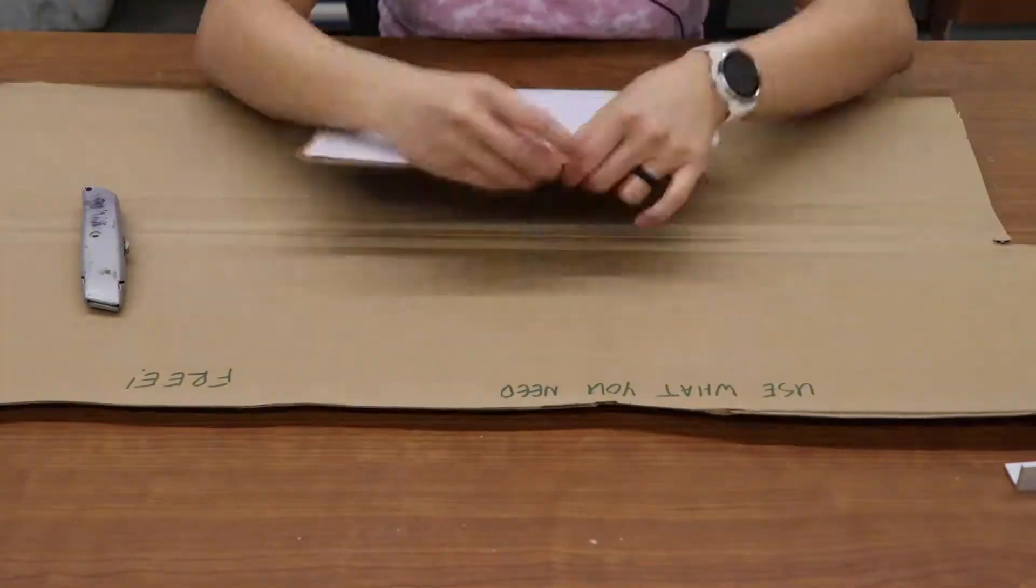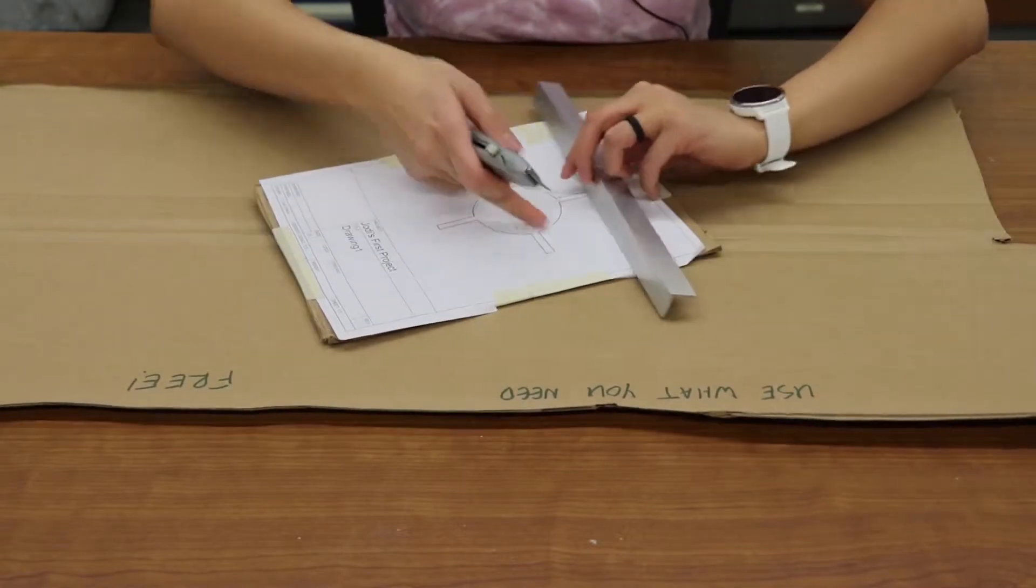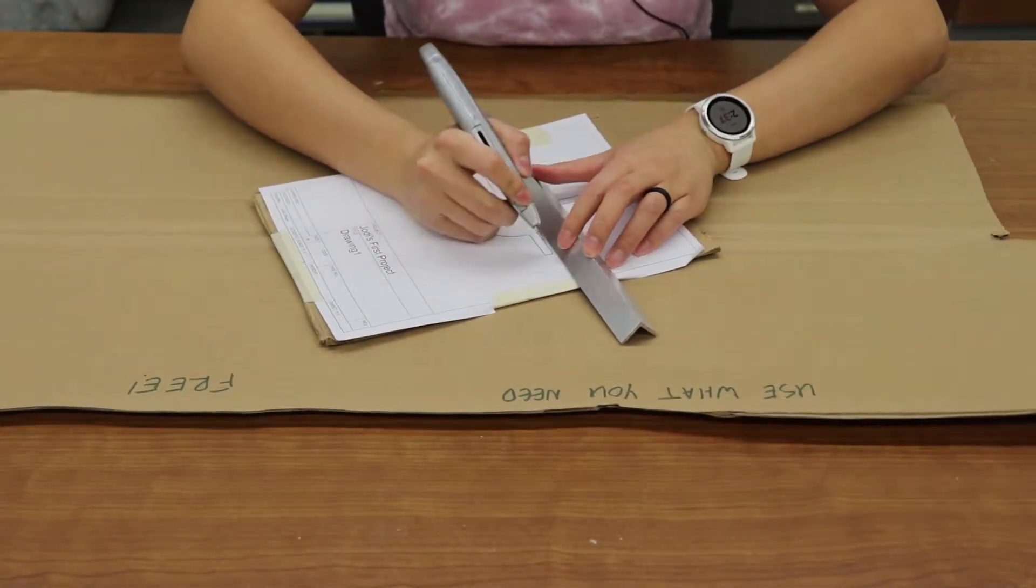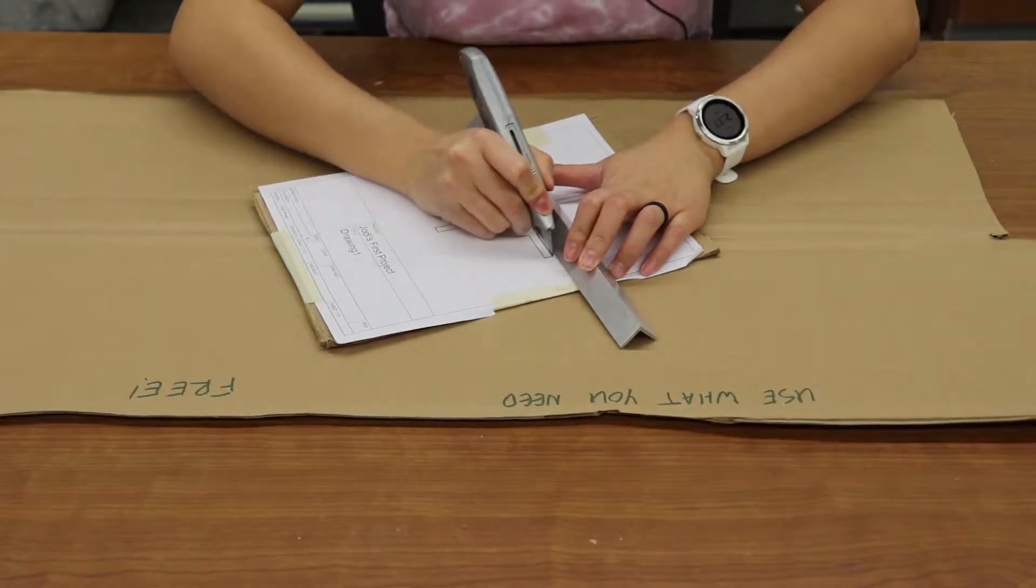Cut out the fin alignment jig. You can use a straight edge to help you cut straight.